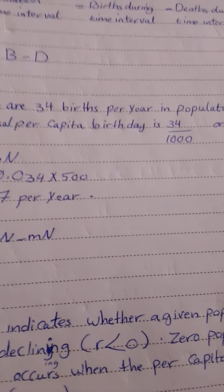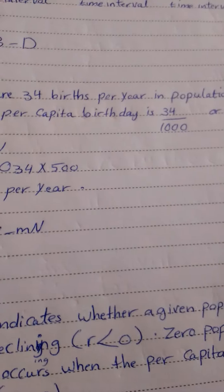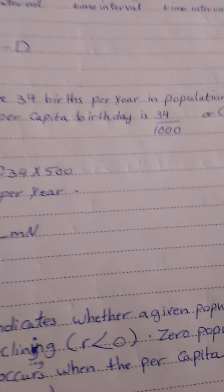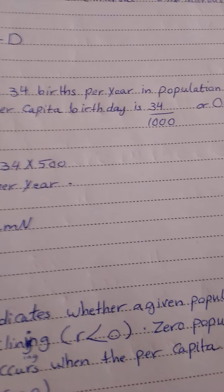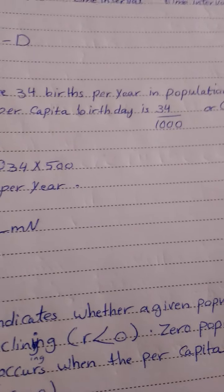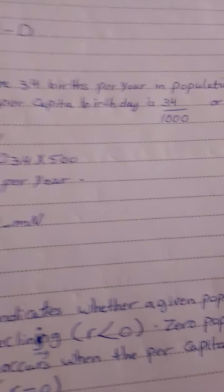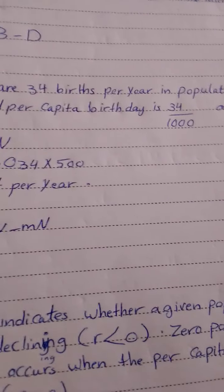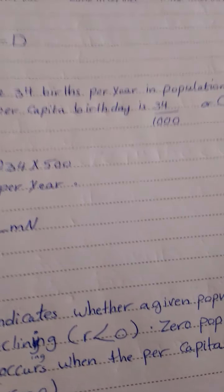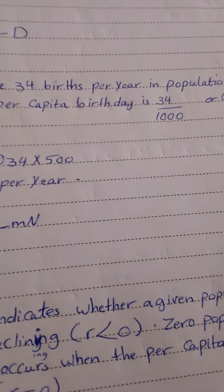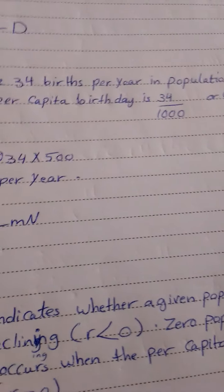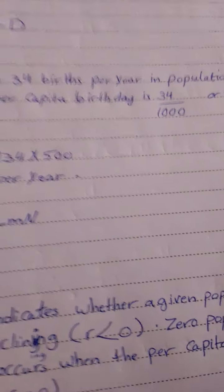At the other life history extreme, an elephant may produce only six offspring in a 100-year lifespan. Charles Darwin once estimated that the descendants of a single pair of mating elephants would number 19 million within only 750 years. Though Darwin's estimate may not have been precisely correct, such analysis led him to recognize the tremendous capacity for growth in all populations.